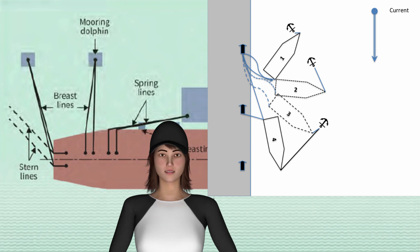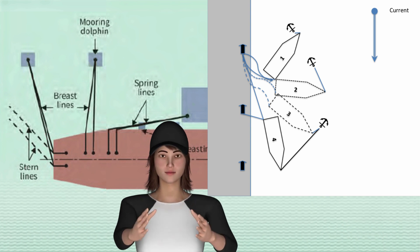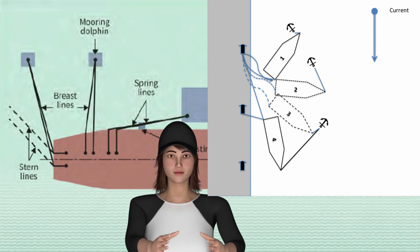Approach the berth at a shallow angle, stemming the tide. Pass out two good stern ropes from the offshore quarter leads. Allow the bow to fall off with the tide.